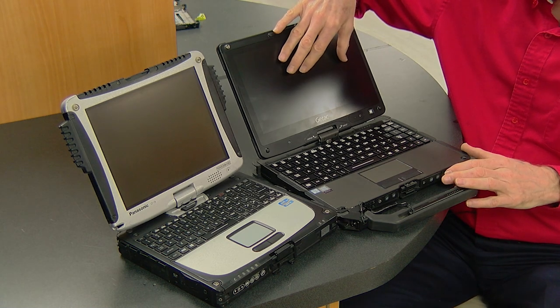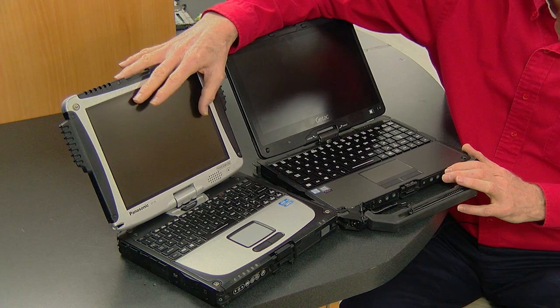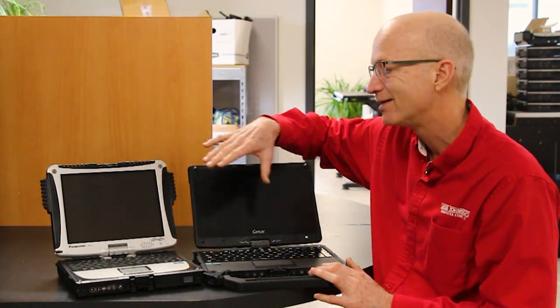Good or bad, this screen is only 800 nits, whereas the Panasonic has a 6,000 nits screen. So I guarantee you're going to see this in the daylight. This one, if it's really bright, you're going to have a harder time.